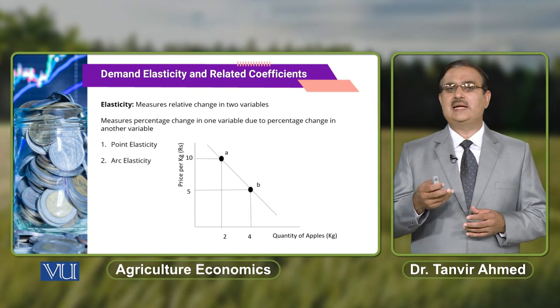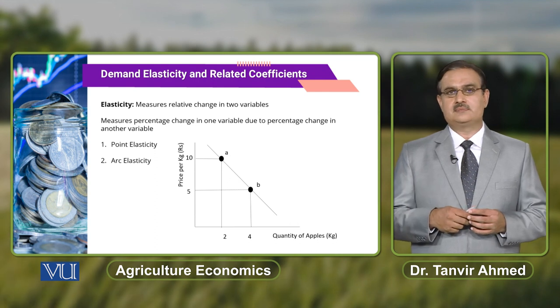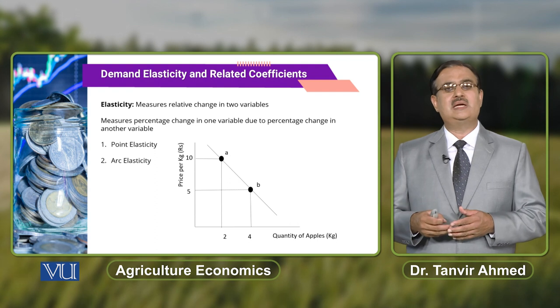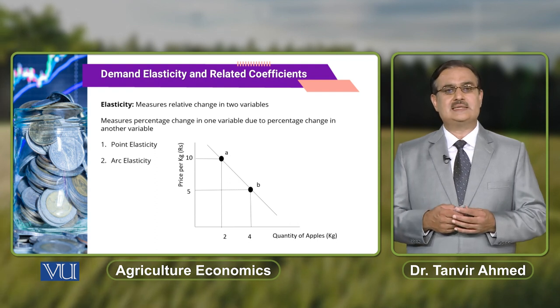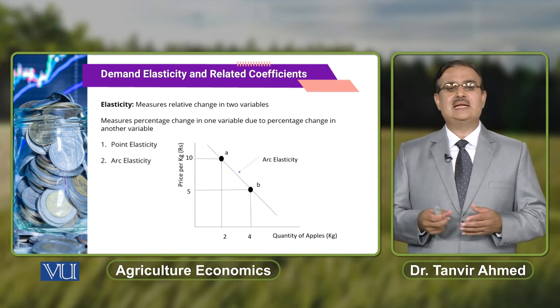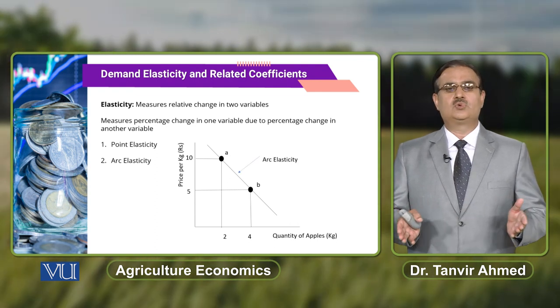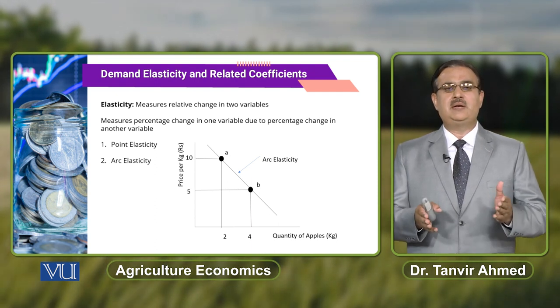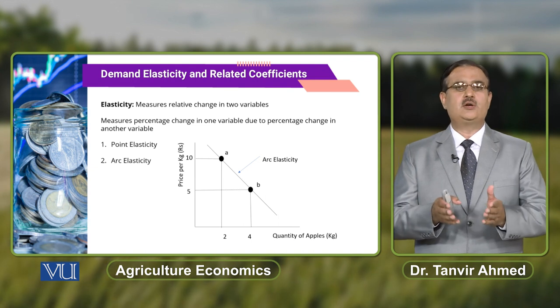When you measure elasticity at a particular point on the demand curve — say at point A or at point B — that is called point elasticity. But when you talk about arc elasticity, that is the elasticity between two points — for example, the elasticity between the midpoint of A and B.